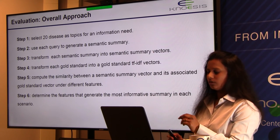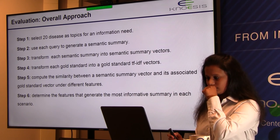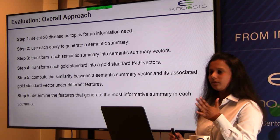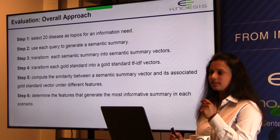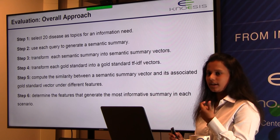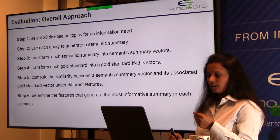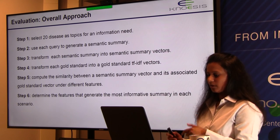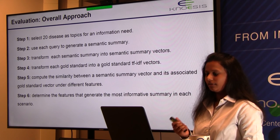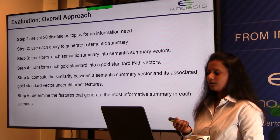To recap: 20 diseases were selected, queries were constructed, and semantic summaries were generated for these 20 diseases. These semantic summaries were transformed into semantic summary vectors, gold standard data was extracted and transformed into gold standard TF-IDF vectors. The next steps are computing semantic similarity to assess summary quality, and identifying which specific feature is most influential in generating summaries.